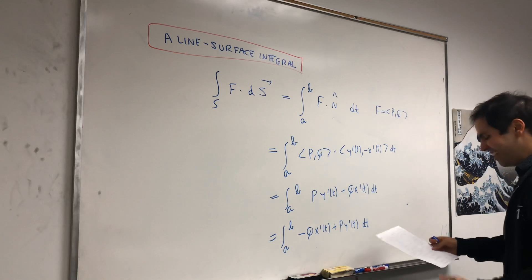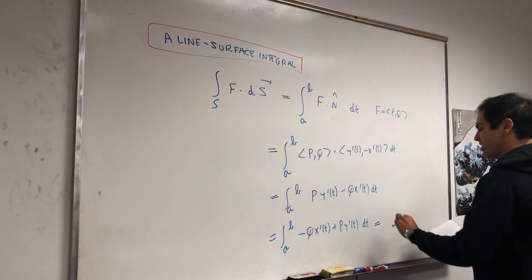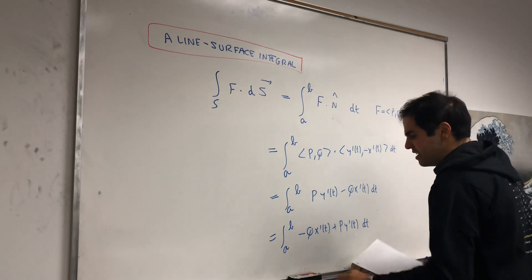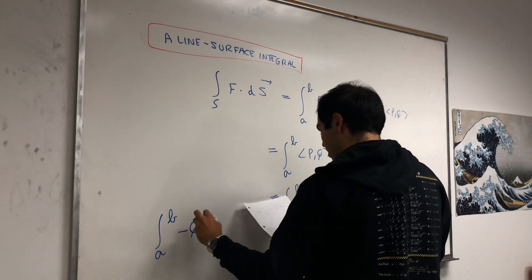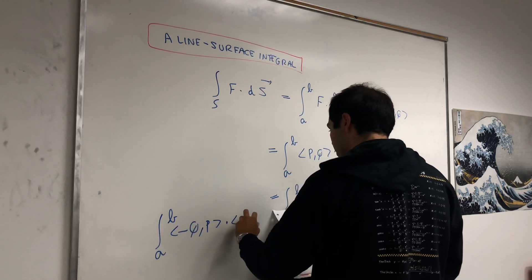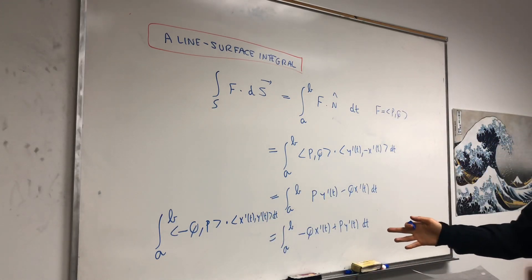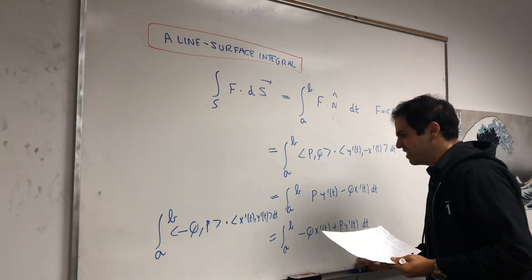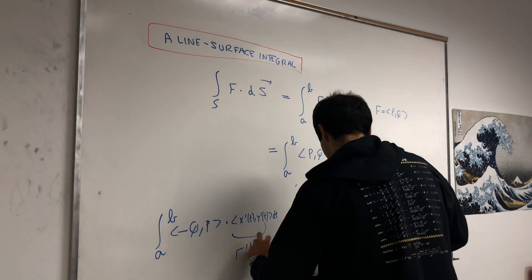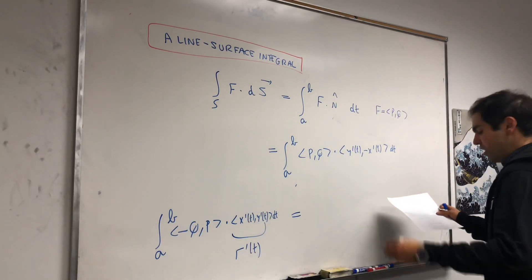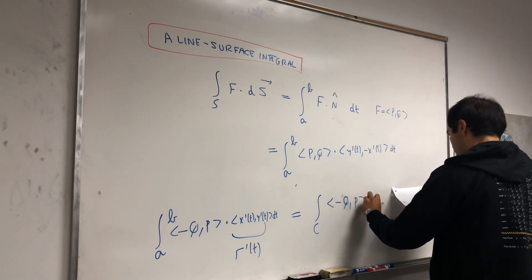Let's rewrite this. This becomes the integral from a to b of -Q·x'(t) + P·y'(t) dt. It turns out we can write this in terms of the direction vector, which is really neat. This equals the integral from a to b of (-Q, P) dotted with (x'(t), y'(t)) dt. The nice thing is that this just becomes an ordinary line integral, since (x'(t), y'(t)) is just r'(t). So indeed this becomes the line integral of the vector field (-Q, P)·dr.